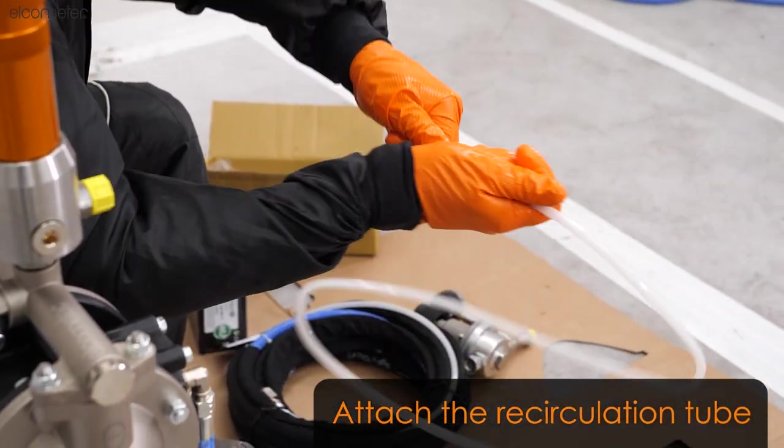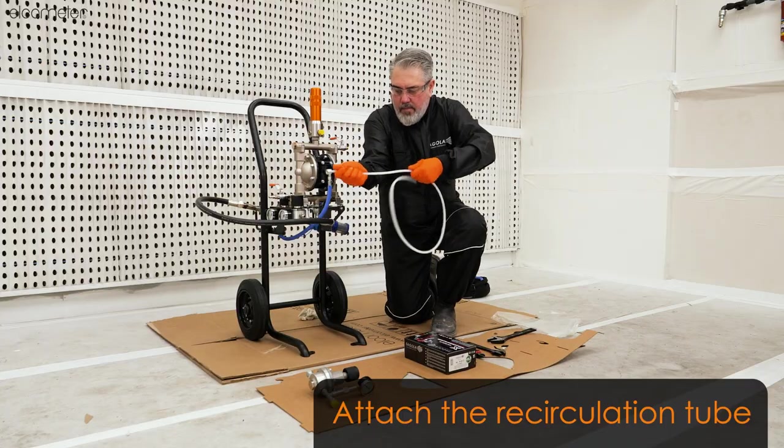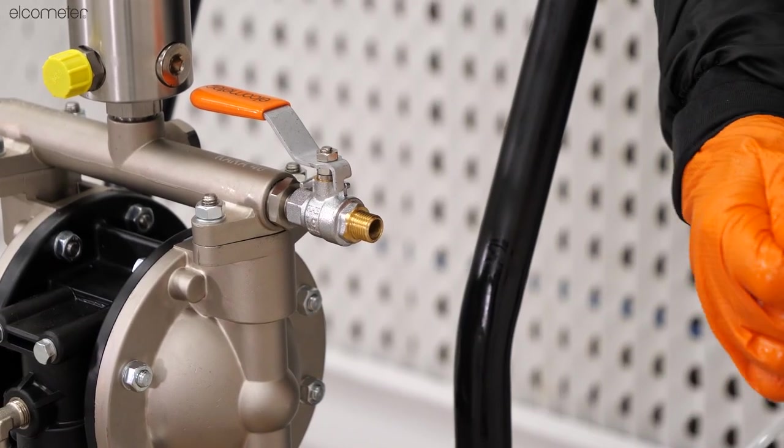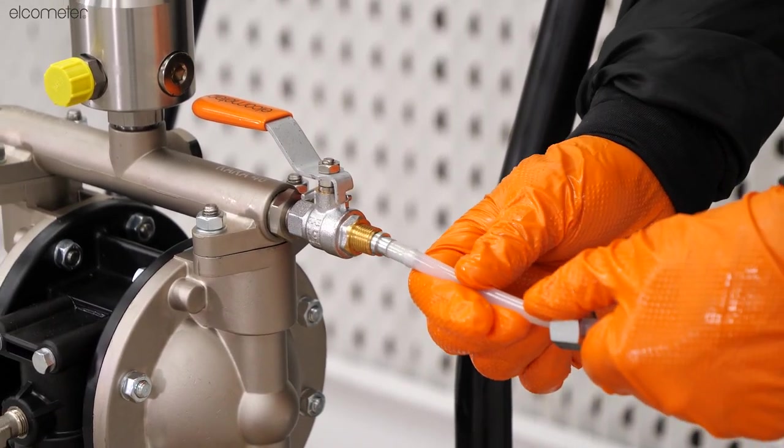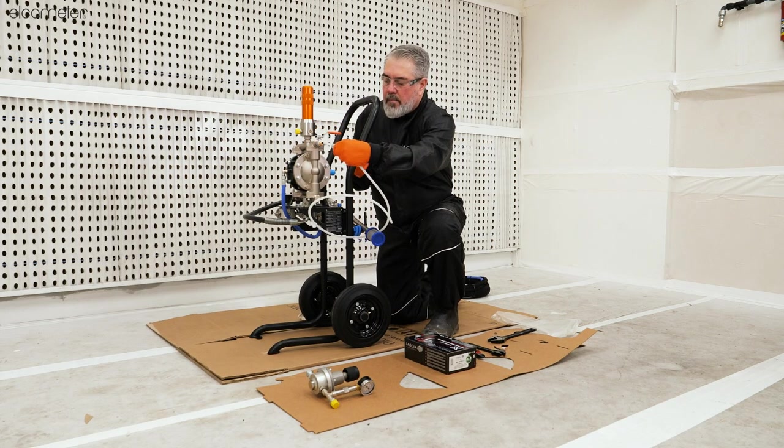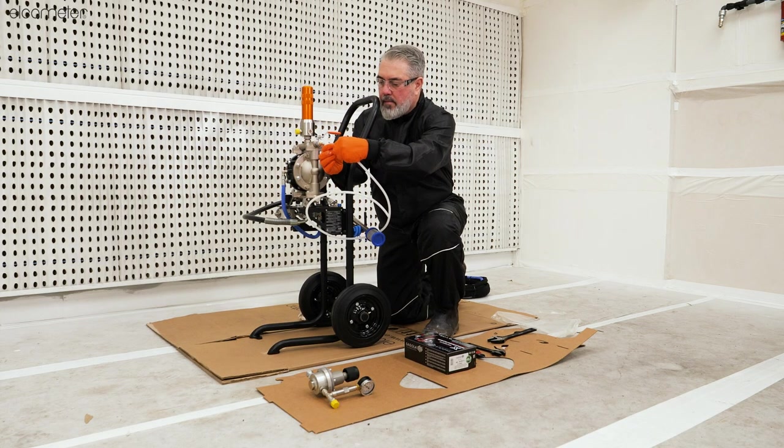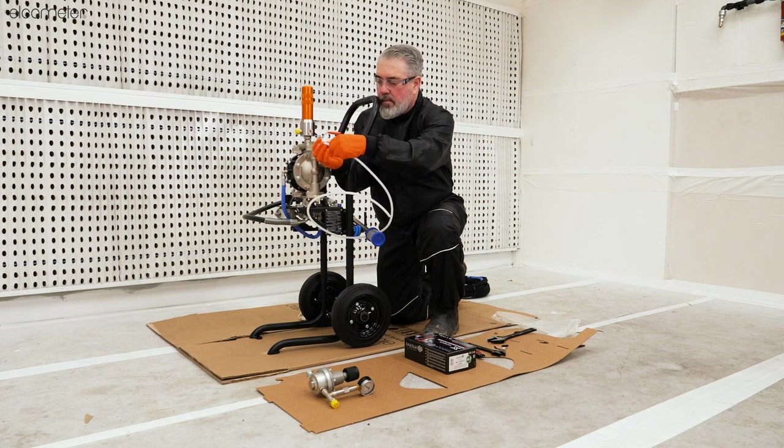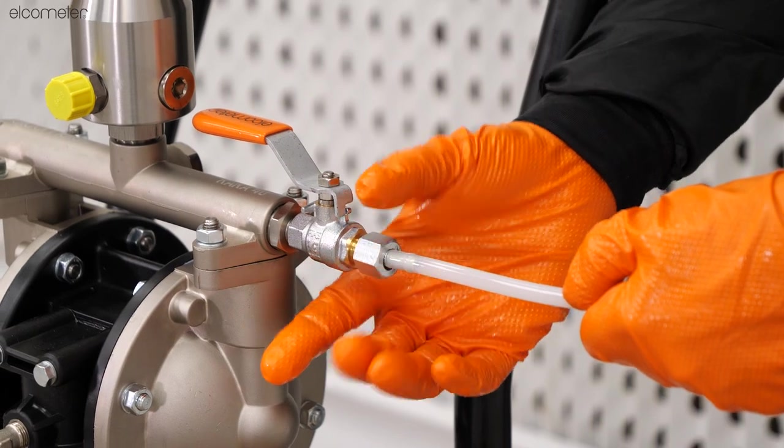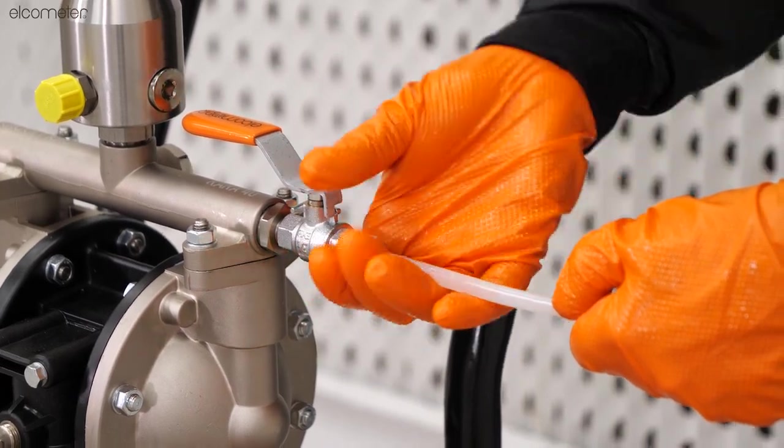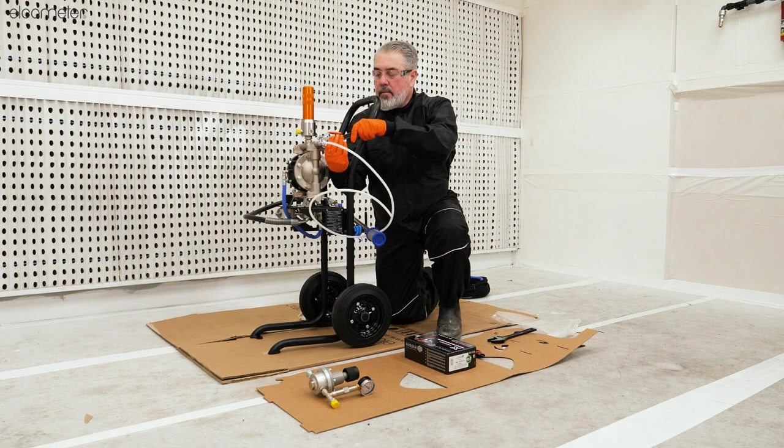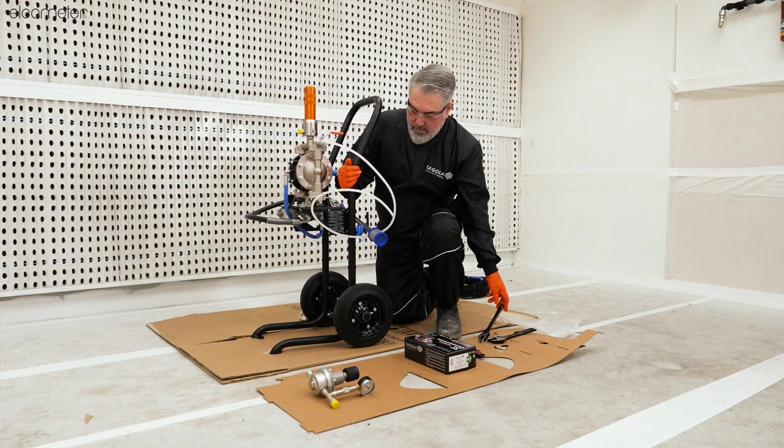Now, take the recirculation tube and uncoil it, making it as straight as possible. Then, slide the collar down a bit and expose the interlocking male fitting. Go to the recirculation ball valve on the CARA and position this into the ball valve outlet. Carefully slide the collar towards the ball valve threading and hand tighten the collar to lock the recirculation tube onto the recirculation ball valve. Tighten it with the adjustable wrench to ensure it is secure.